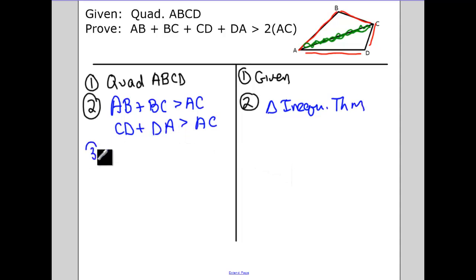Two sides of a triangle have to be larger than the third. So then, I know that AB plus BC plus CD plus DA has to be greater than twice AC. It has to be greater than, I just added the left sides and added the right sides.